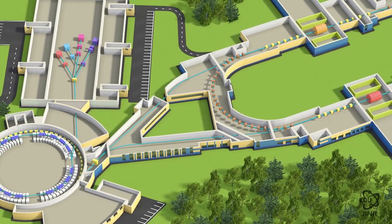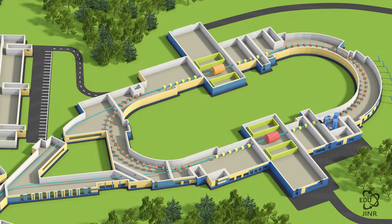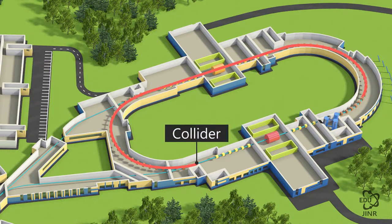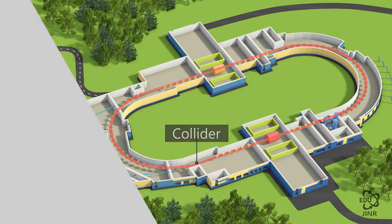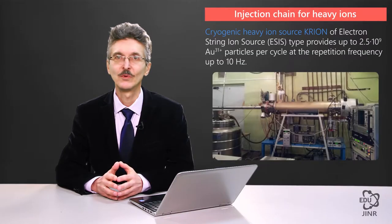The principal facility of the NICA complex is where experiments on colliding beams are carried out. It has two collider rings, which operate in a particle storage mode and have two points of beam intersection — the two meeting points. Now I will tell you about each of the elements of the accelerator complex in more detail.